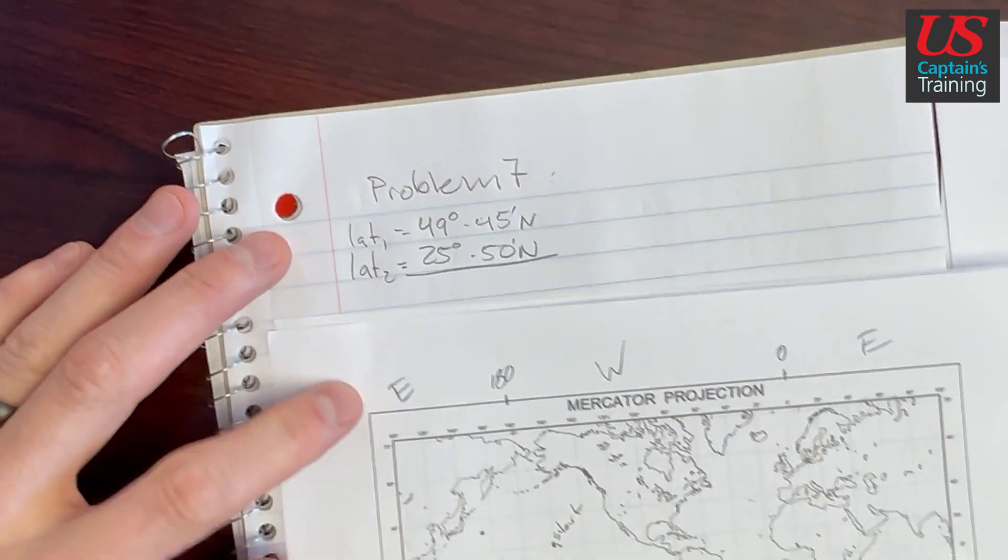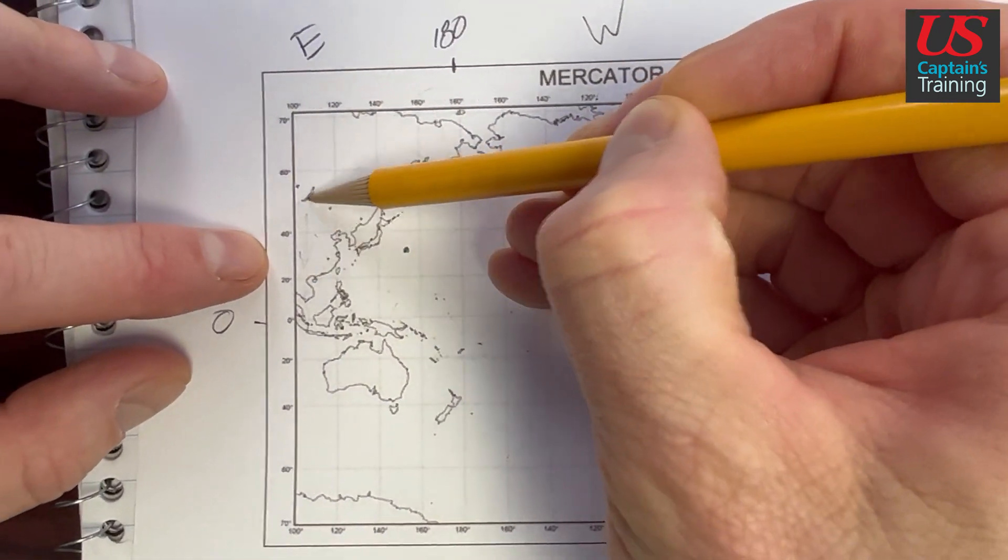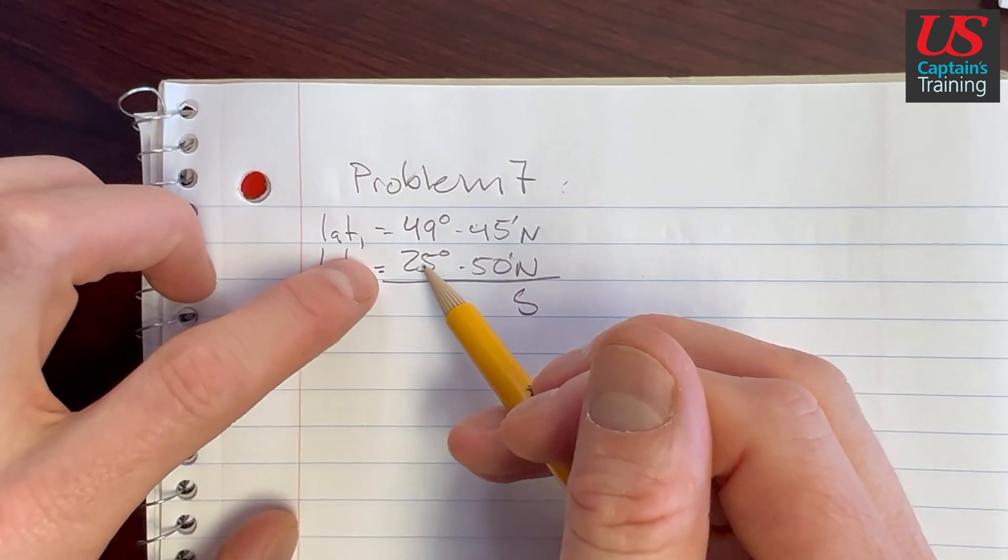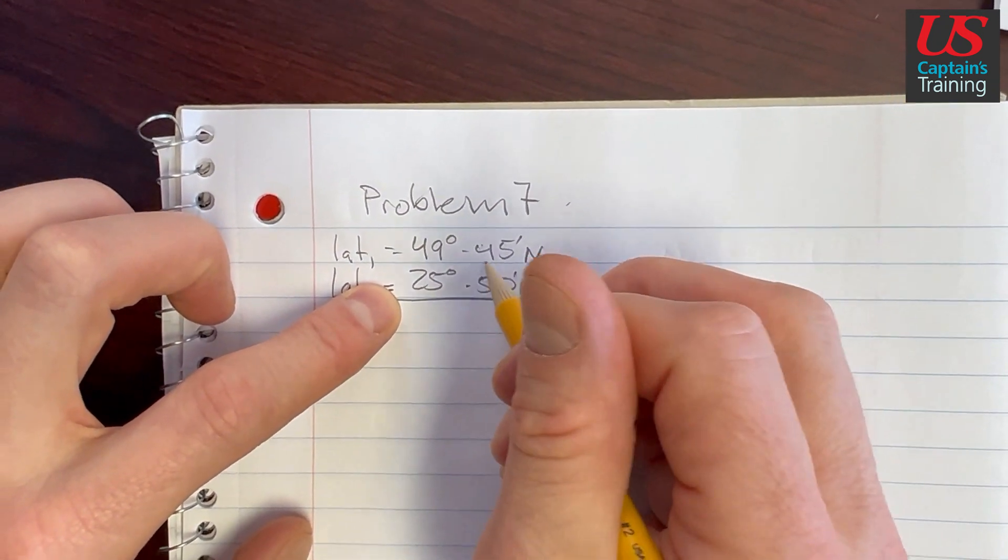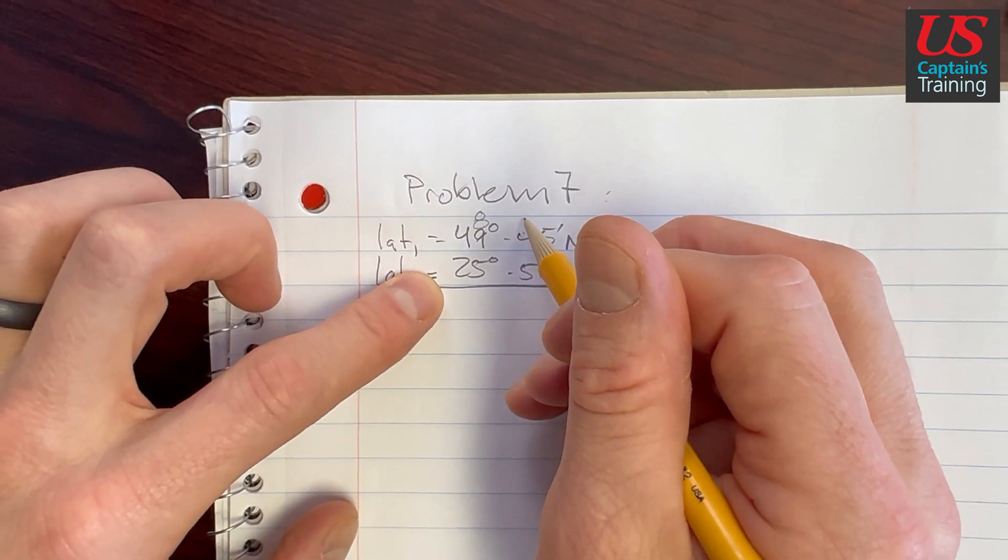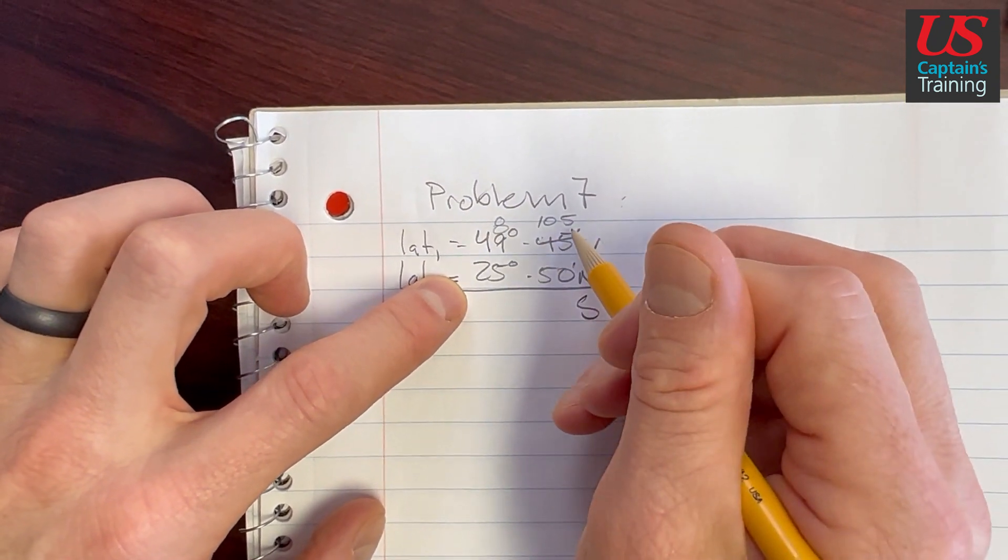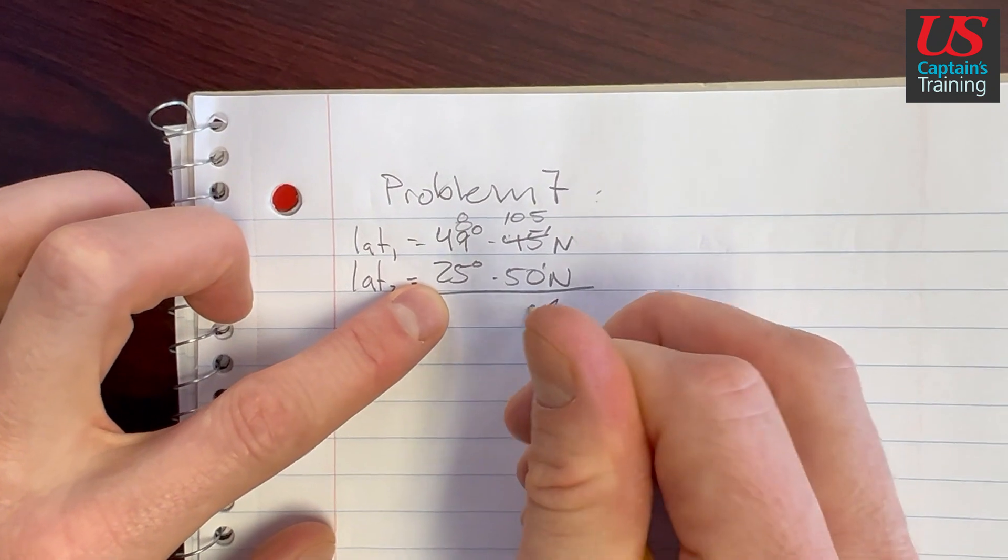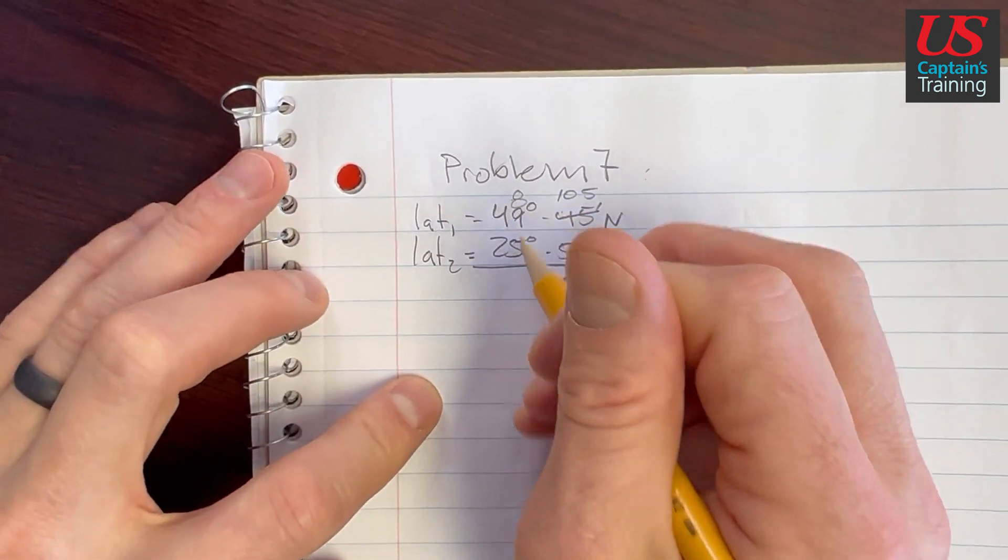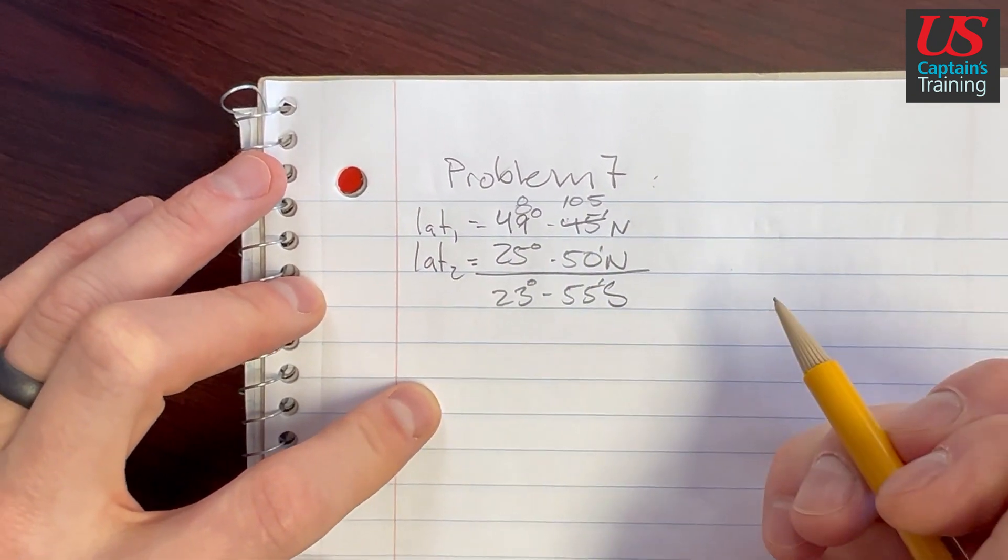Now we need to figure out which way we were going. We went from 49 north to 25 north. So from 49 to 25, we were headed south. So that's our label, south. And 49 minus 25, we can do that. We can't do 45 minus 50, so we'll have to borrow one from here. We'll turn this into an eight, and this will actually turn into 105 because when we borrowed one degree, we got 60 minutes. So now we got five minus zero is five. Ten minus five is five. We have 55 minutes. And now eight minus five is three. Four minus two is two. 23 degrees 55 minutes south.